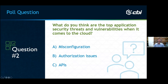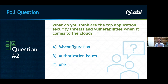Poll question: what do you think are the top application security threats and vulnerabilities when it comes to the cloud? Are we talking misconfiguration, authorization issues, APIs? The cloud is ultimately an interface of some sort to all this technology, and we need to make sure we're focused on that as the primary attack vector in many cases. The poll results show misconfiguration as the top answer.